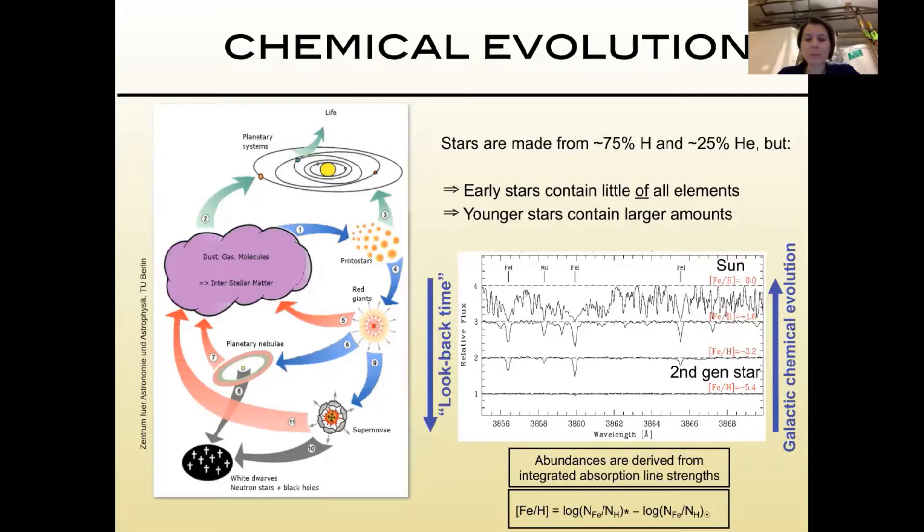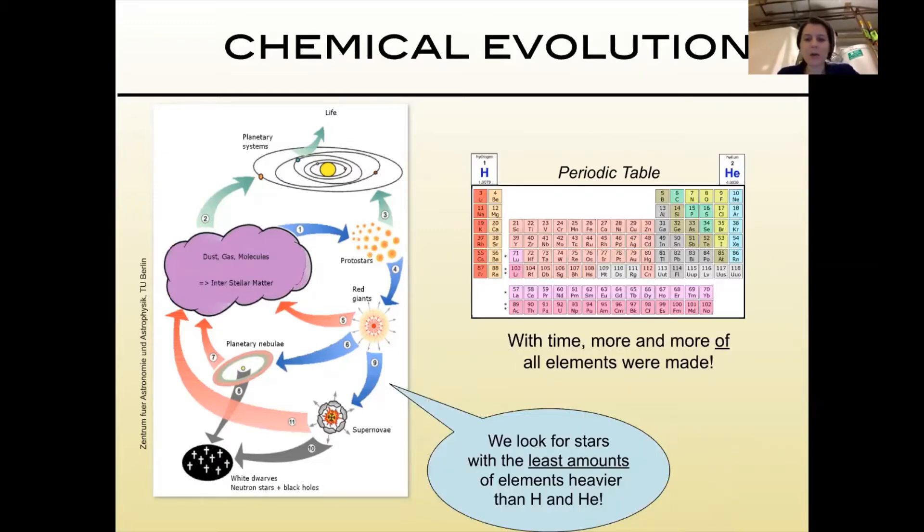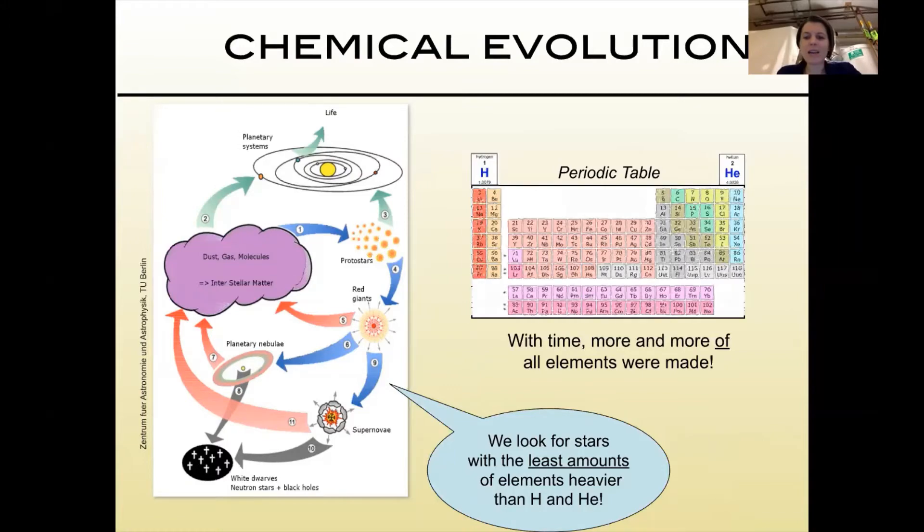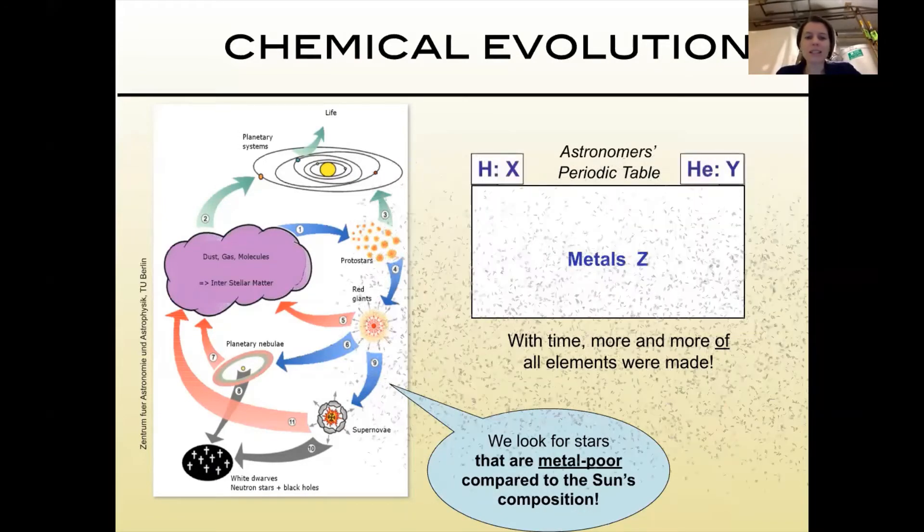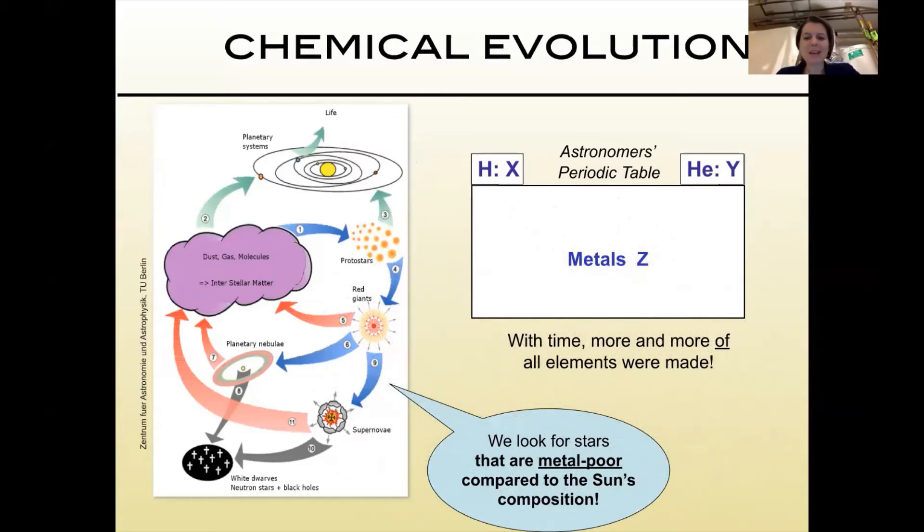Let's talk about the periodic table. There's hydrogen, helium, and then all the other elements combined. Because the universe is a complicated place, some astronomers decided that this is all way too complicated—let's just call it all metals. When I talk about a metal, I mean any element that's heavier than hydrogen and helium. Accordingly, we look for the most metal-poor stars when we look for the oldest stars because they have the smallest amounts of heavy elements in them.